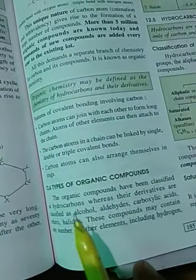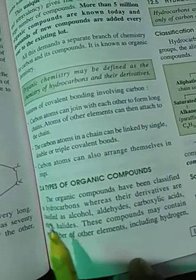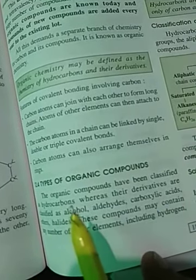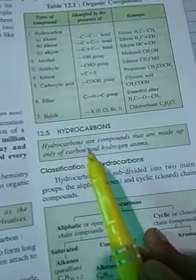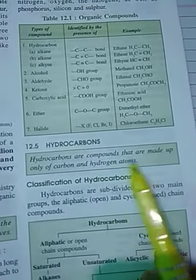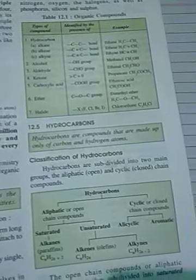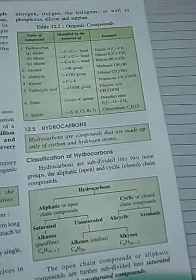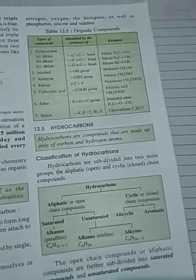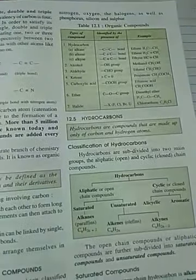From hydrocarbons we get their derivatives. First of all, what is a hydrocarbon? Hydrocarbons are compounds that are made up of only carbon and hydrogen atoms — nothing else, no third element.